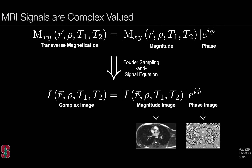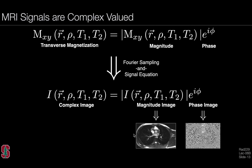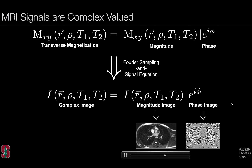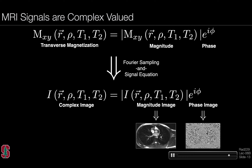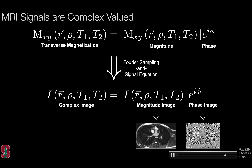Conventionally, we look at the magnitude images. Here's an example of a magnitude image taken during the cardiac cycle towards the base of the heart. But we can actually reconstruct a phase image, and the phase image can store really useful and important information. We won't talk about encoding information in the phase in this lecture, but we'll begin to build up some mathematical tools useful for understanding how to encode information in the phase.